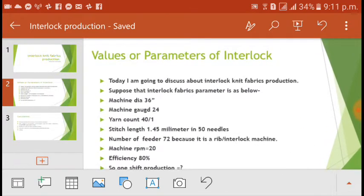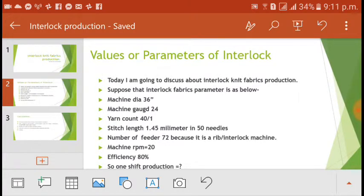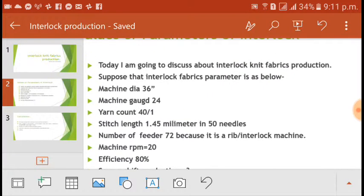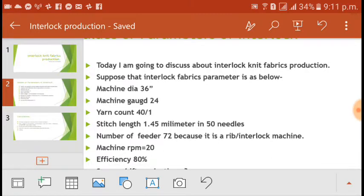Values and parameters of interlock: Suppose that interlock fabrics parameter is as below - machine dia 36 inch, machine gauge 24, yarn count 40 single.